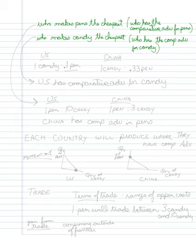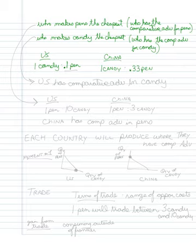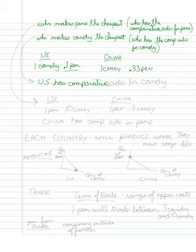For candy: the U.S. faces 1 candy = 1/10 of a pen, while China faces 1 candy = 1/3 of a pen. Who makes candy the cheapest? The U.S., because they sacrifice only 1/10 of a pen. So the U.S. has the comparative advantage in candy — they can simply make it the cheapest.